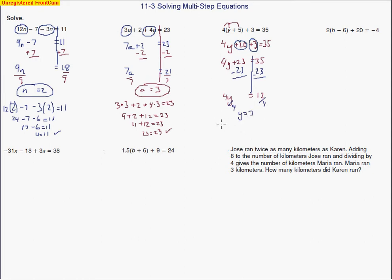I'll check my work by substituting 3 back in: 4 multiplied by 3 plus 5, then add the 3, equals 35. Doing the work inside the parentheses: 4 times 8, plus 3 equals 35. That makes 32 plus 3, and that does equal 35. When the two numbers agree, you know you've done the problem correctly.